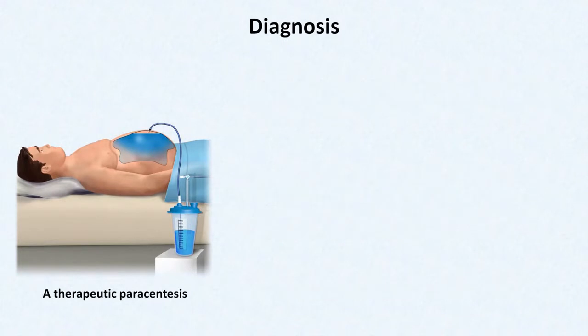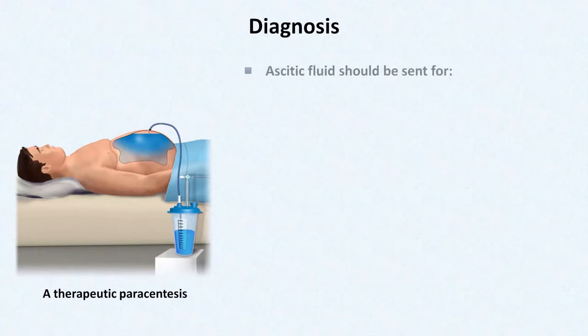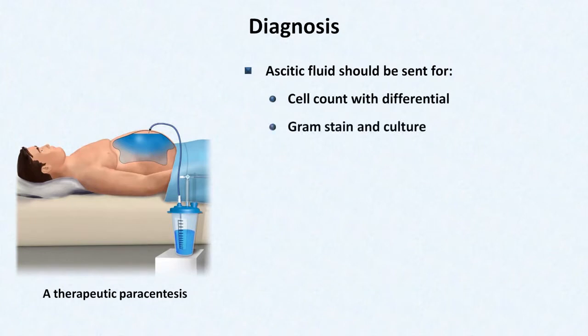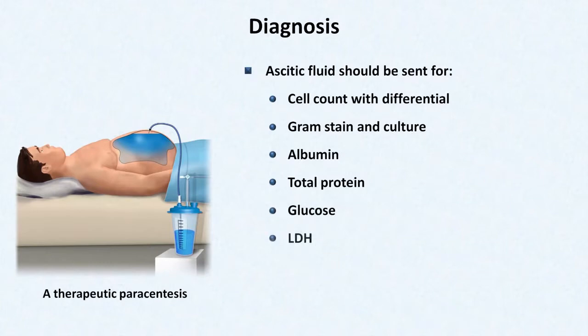I'm not going to go into the details of how the paracentesis is actually performed — there are other videos online that provide a great demonstration, and a link to one is below. But once the paracentesis is done, there is a list of specific tests the ascitic fluid should be sent for. Cell count with differential and gram stain culture are the most important. The fluid should also be sent for albumin, total protein, glucose, and LDH.